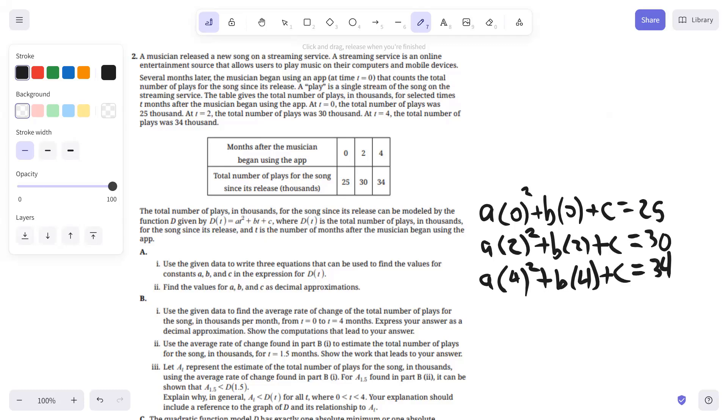For part two, find the values of A, B, and C as decimal approximations. You can do this in Desmos, but if you look at this first equation, since those X values or T values are 0, this is just going to be that C equals 25. And then equation 2 here and 3, those are going to simplify greatly. Equation 2 is going to become 4A plus 2B plus 25 equals 30. And equation 3 is going to be 16A plus 4B plus 25 equals 34.